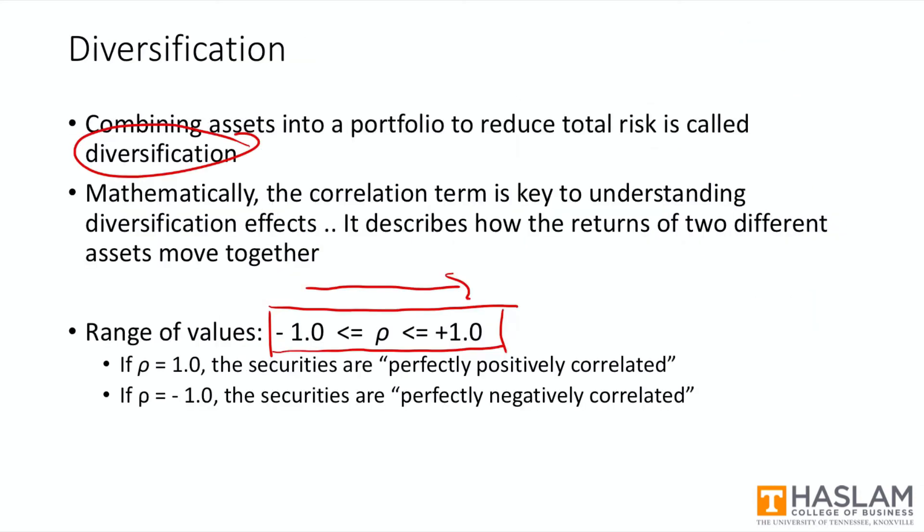And so with positive correlation, you're going to have assets that tend to gain at the same time or lose at the same time. So there's little to no offsetting of gains and losses between them. In the extreme case of rho equals one, we'd say the securities are perfectly positively correlated. There, there's absolutely no diversification benefit.